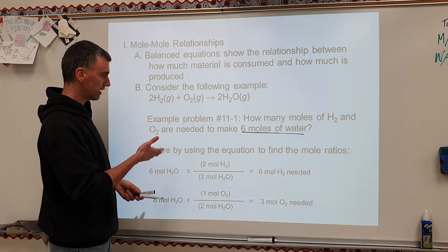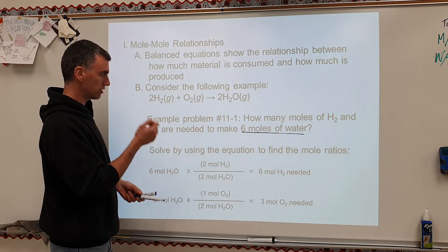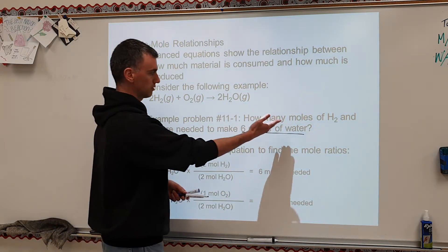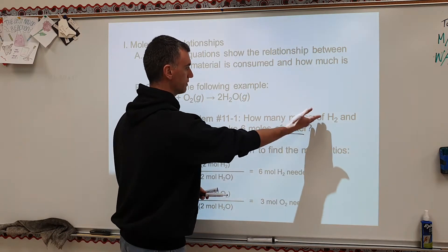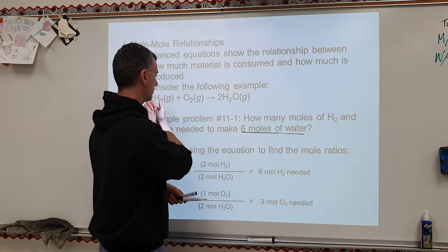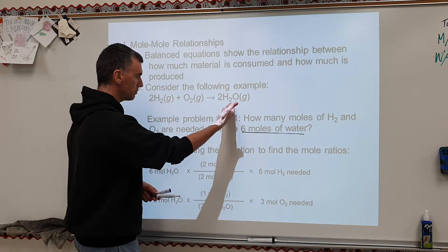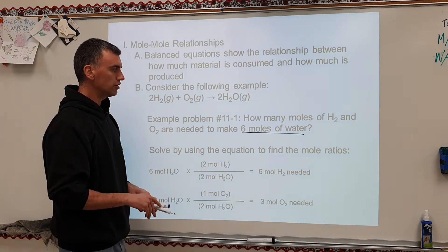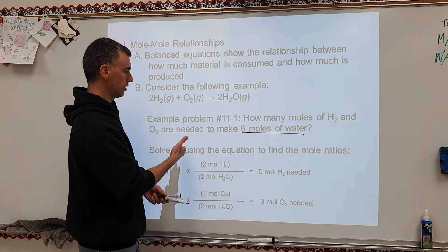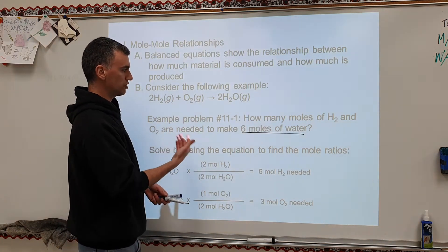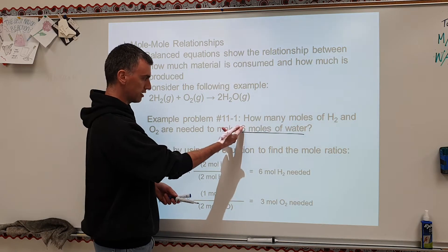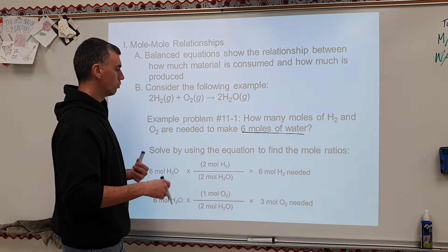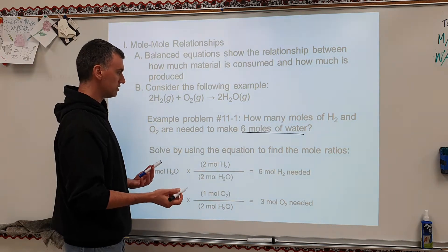Because of that, I look at this question and think: what do I need to do? It gives one chemical and asks for a different chemical — that tells me I need a balanced equation. After you come up with a balanced equation, then you identify what you're being asked for and what you're given. This is your given because it's got a number and a chemical identity.